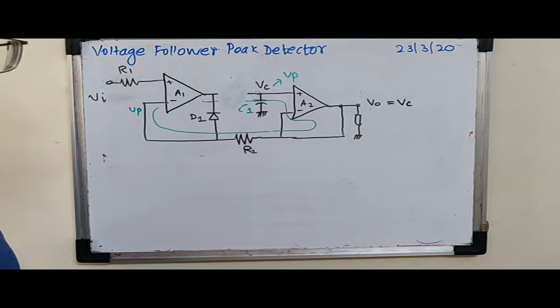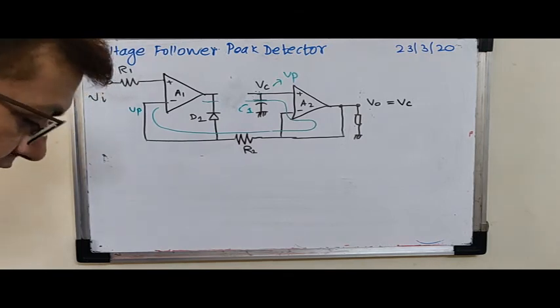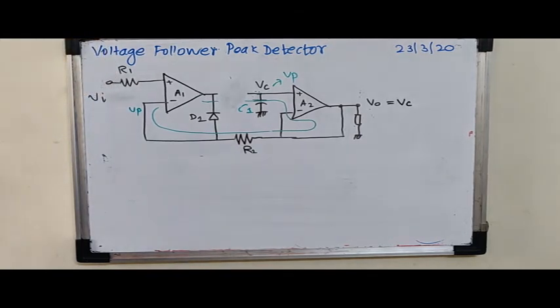this diode D1 will be forward biased, and then in that case the output of the operational amplifier is prevented from going into the negative saturation. So this actually is very much the working of this circuit.